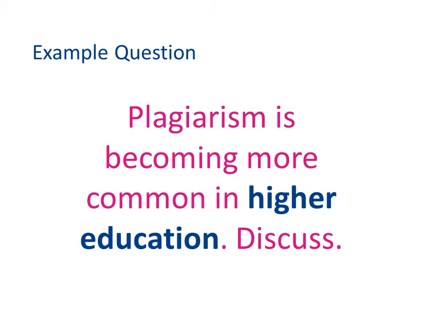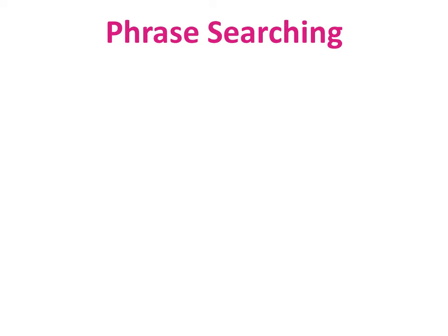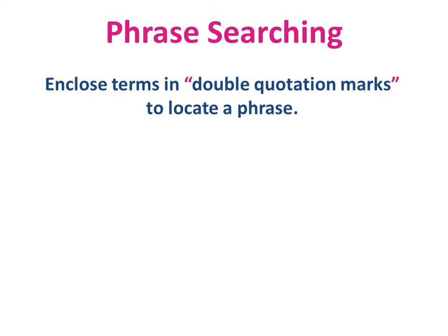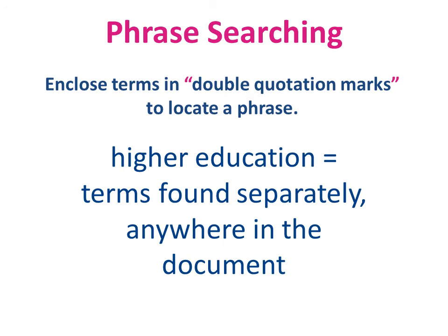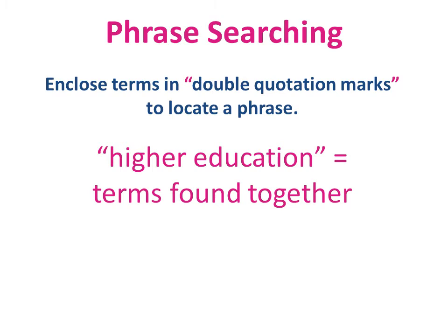Going back to the example question, we will also see that we need to look for the phrase 'higher education'. By simply typing the words higher education into a resource, many databases will look for the terms separately. By placing quotation marks around multiple terms, you are employing phrase searching. This will ensure that the words will be found next to each other, making your search more specific. Remember to only use quotation marks around actual phrases.